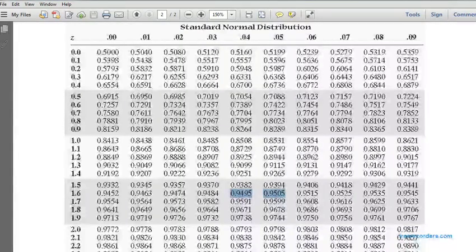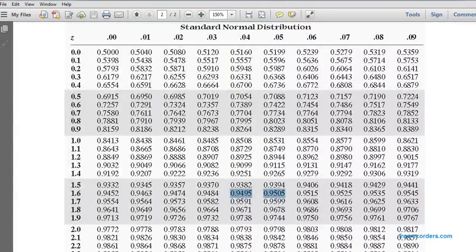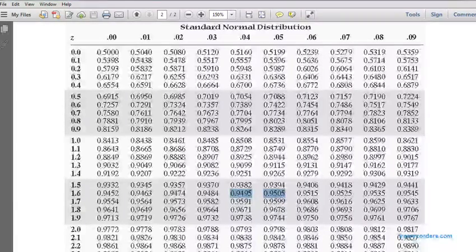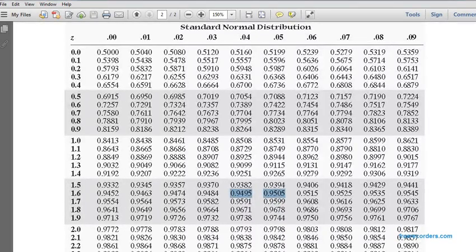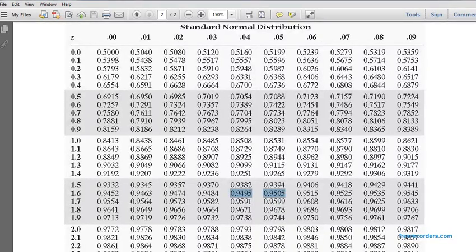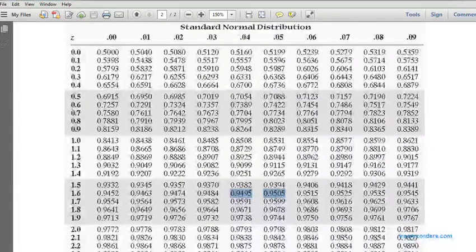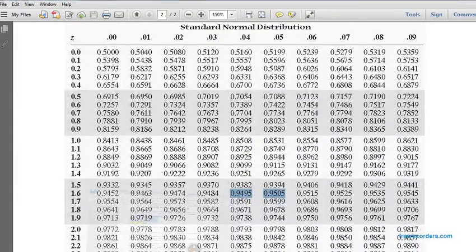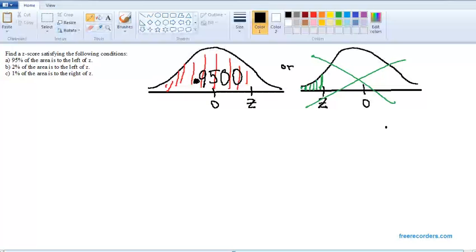You'll notice that 0.9500 is not in the table. It's exactly halfway between 0.9495 and 0.9505. What are the z-scores that give us those probabilities? Well, 0.9495 comes from a z of 1.64, and 0.9505 comes from a z-score of 1.65.